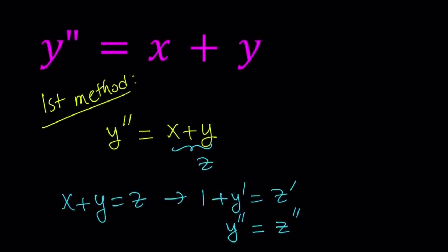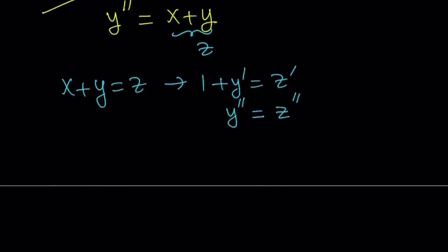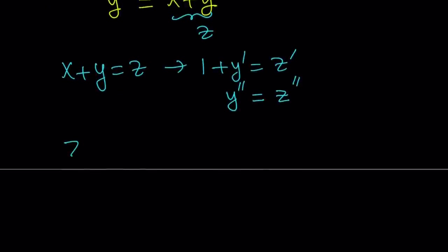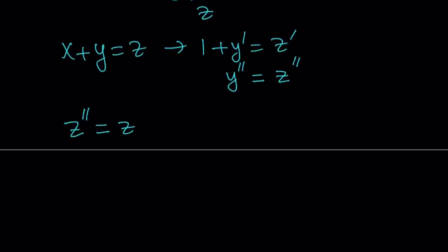We can go ahead and replace y double prime with z double prime, and x plus y with z. That's going to give us a very simple differential equation. To solve this, I'm going to put z on the left hand side, so it's going to be z double prime minus z equals 0.